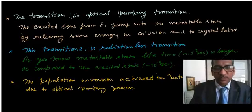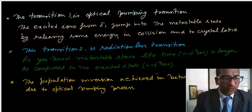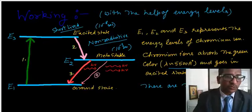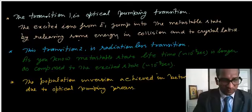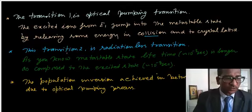The first transition is optical pumping transition. Excited ions from E3 jump into the metastable state E2 by releasing some energy in collision with crystal lattice. This is the radiation-less transition.